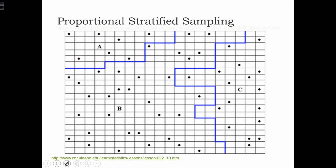This is an example of proportional stratified sampling. Suppose that the grid, or the mesh that we've drawn, represents the sampling frame. We then divide the sampling frame up into three strata: A, B, and C.